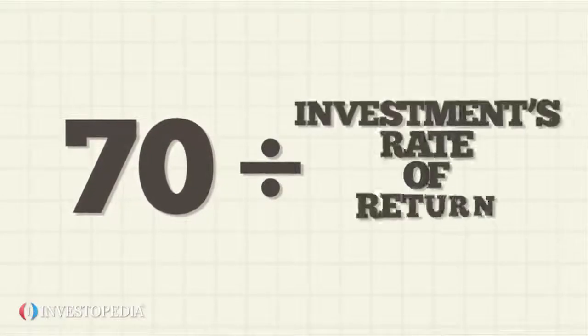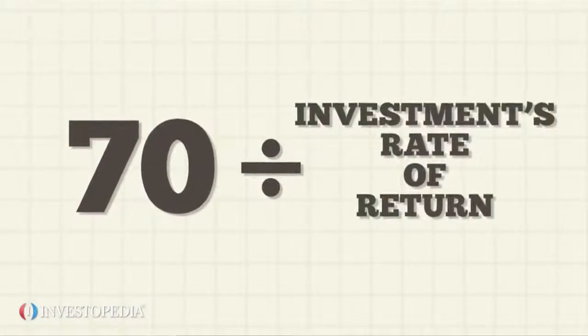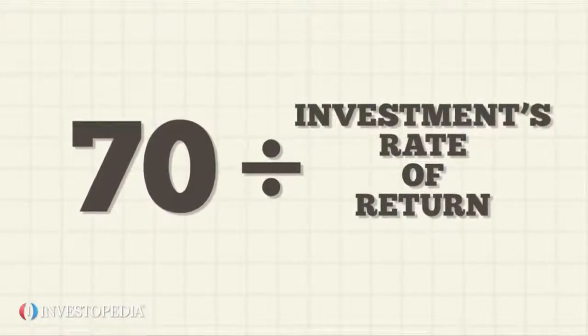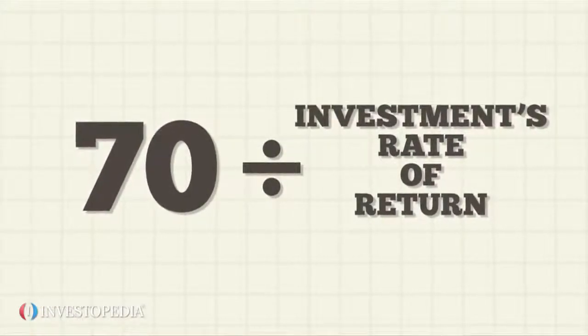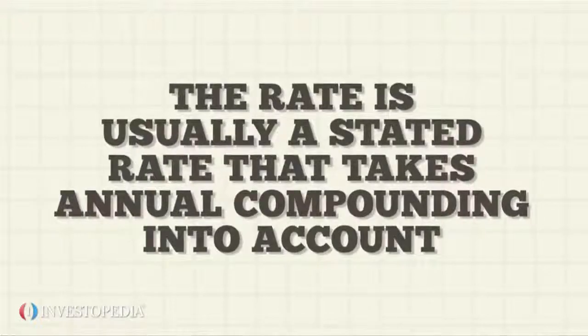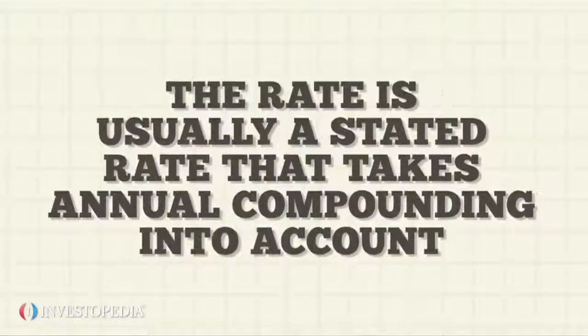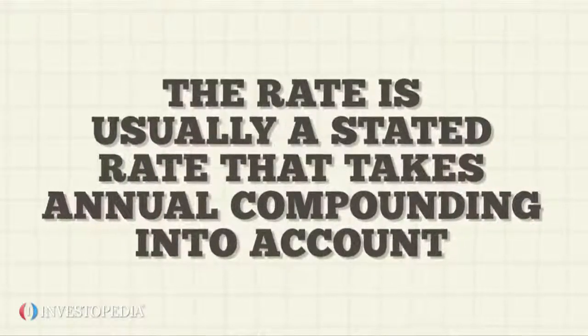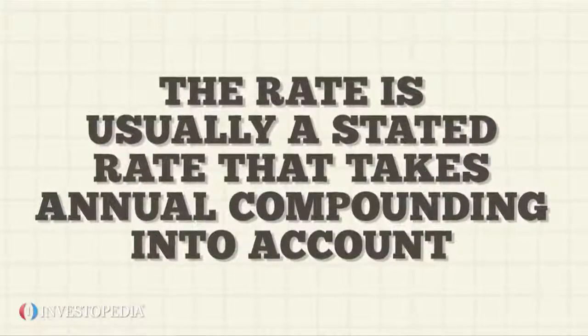Take the number 70 and divide it by the investment's rate of return. For calculations involving an investment, the rate is usually a stated rate that takes annual compounding into account.